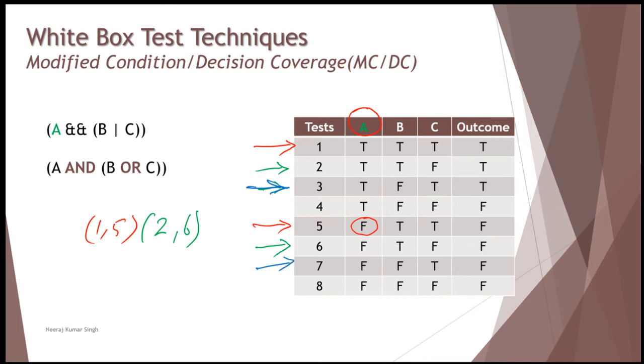But B and C remain same as test case number three. But yes, if A is flipped in these scenarios, the outcome is different. Thus, we can also consider a pair of three and seven as a good test case for us. Now that's with respect to test case, with respect to condition A. If condition is flipped, the outcome also flips. And this is how you identify the pair of test cases, which might be a good combination in order to execute a test.